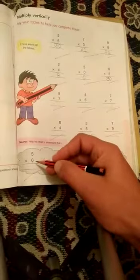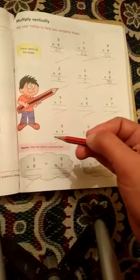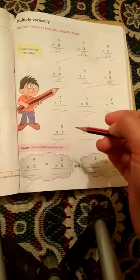Next question is, 5 × 6 is equal to 6 × 5. जब भी हम same number को multiply करते हैं, तो उनका answer always same आता है, okay?